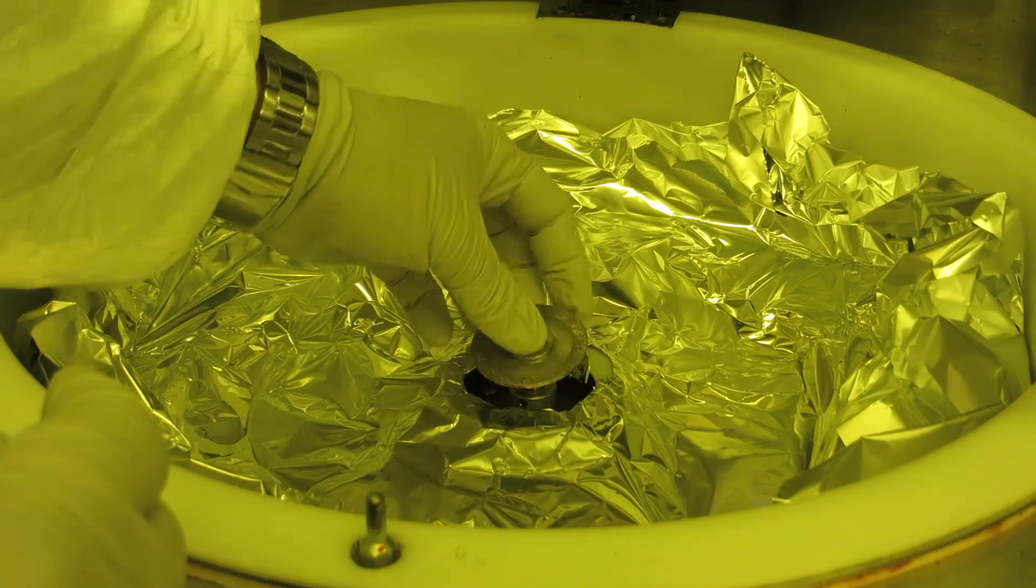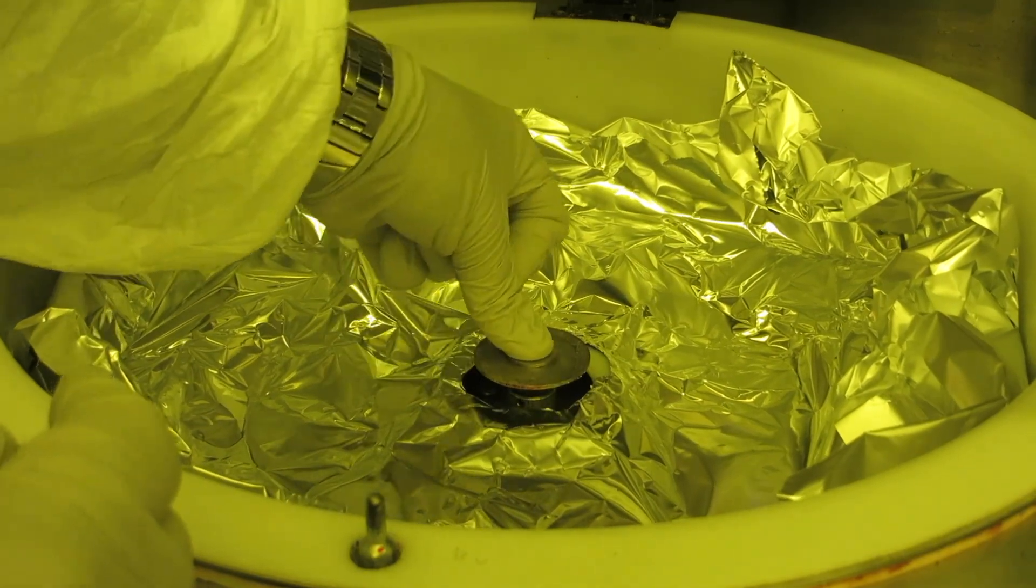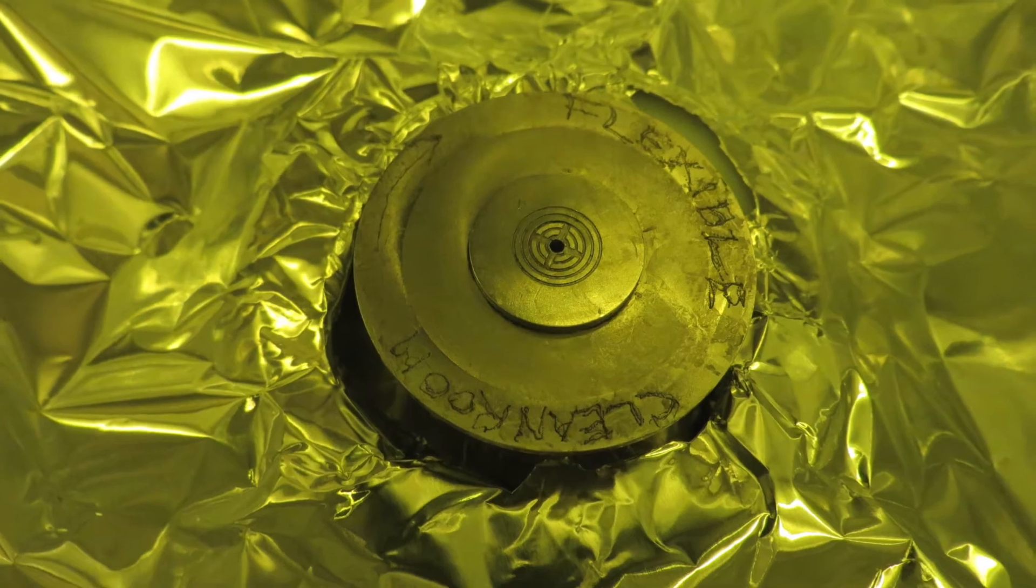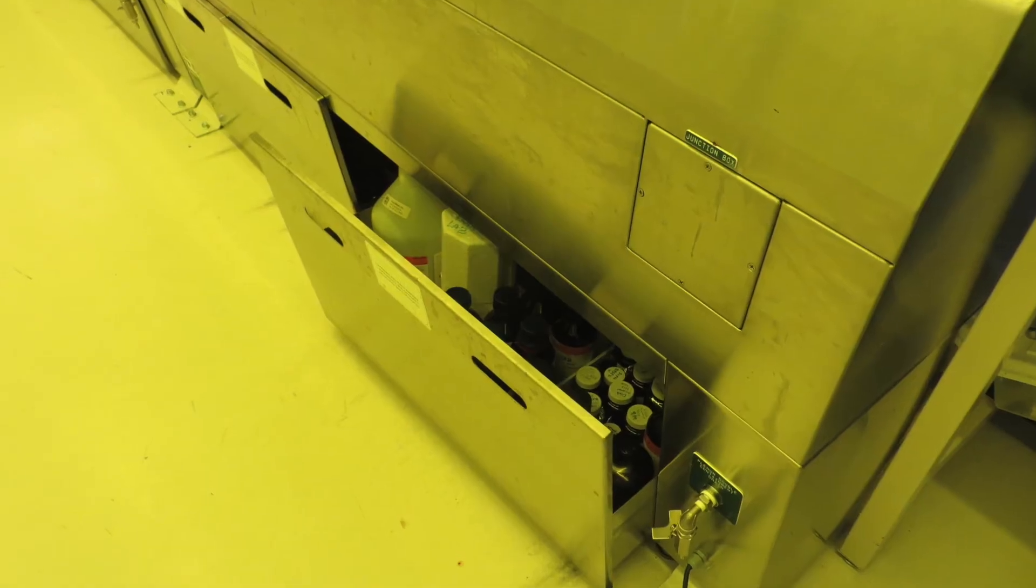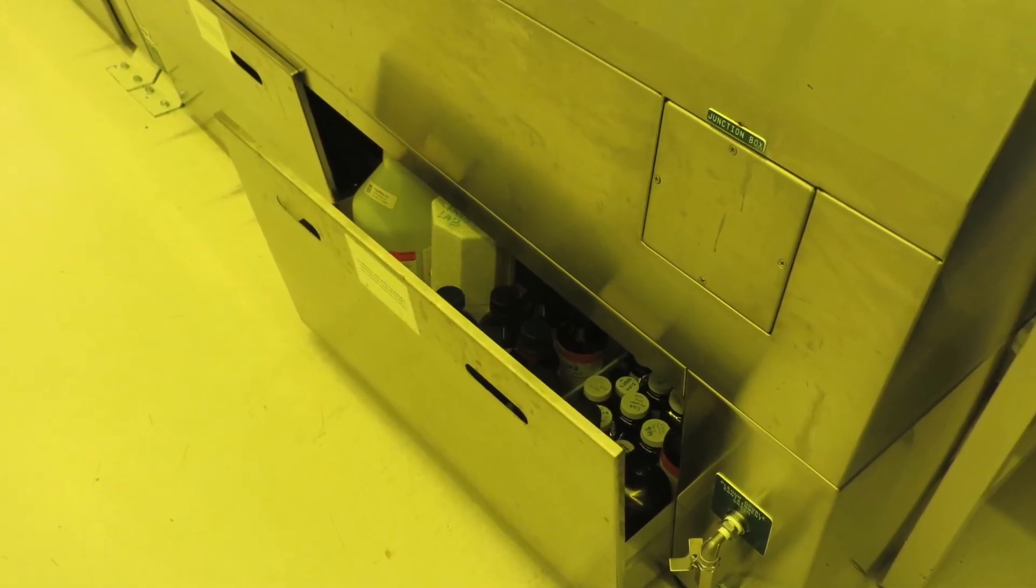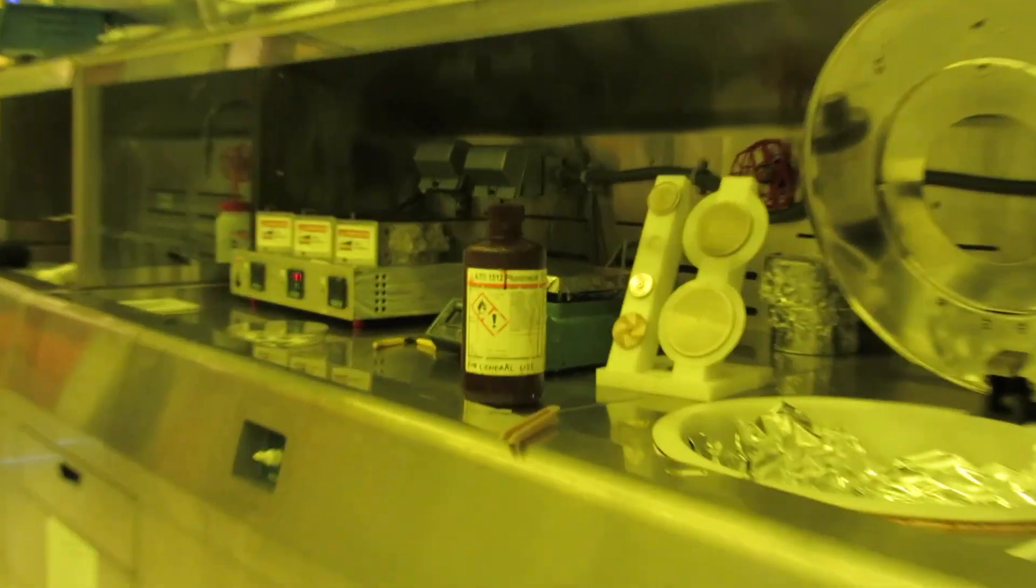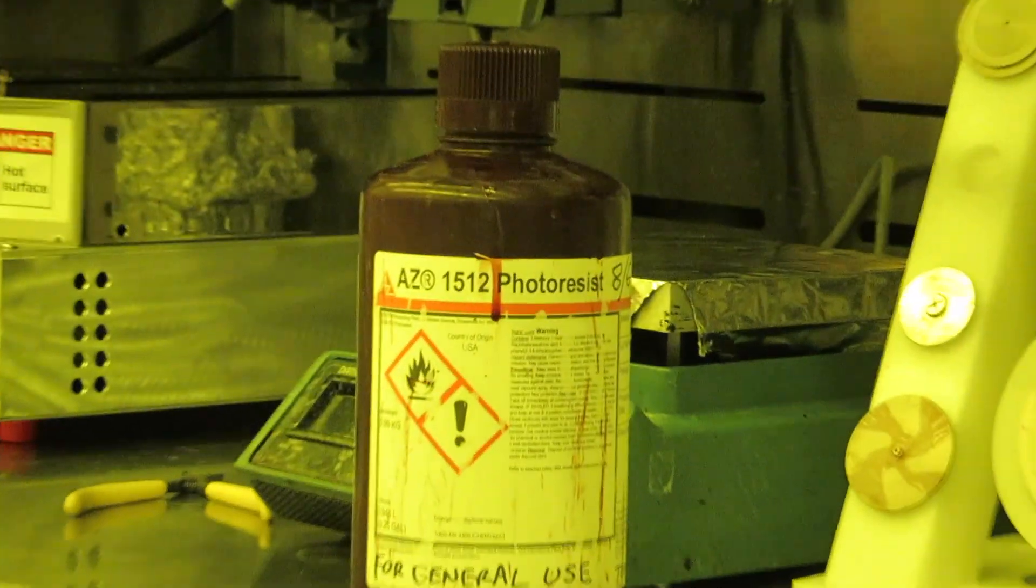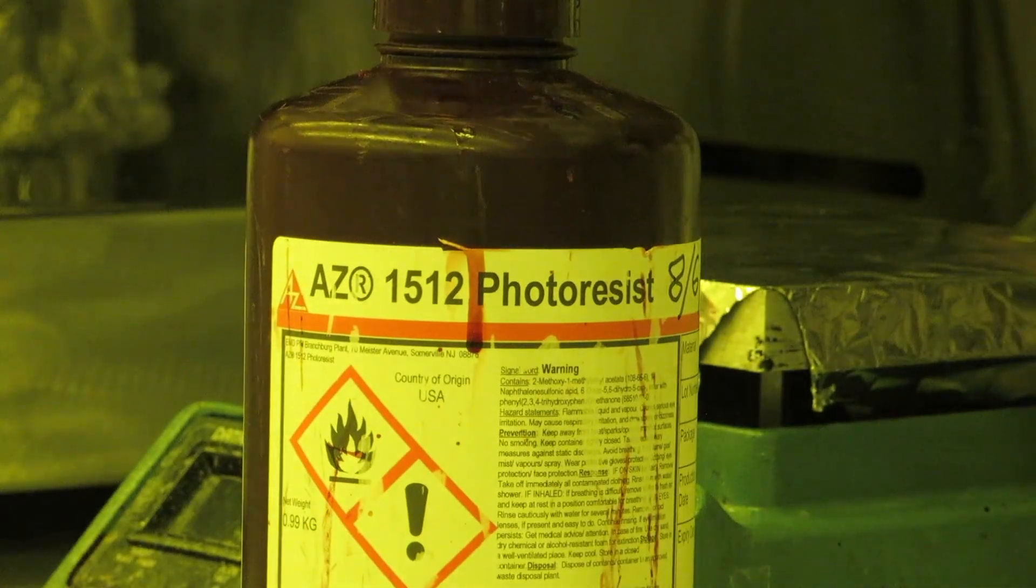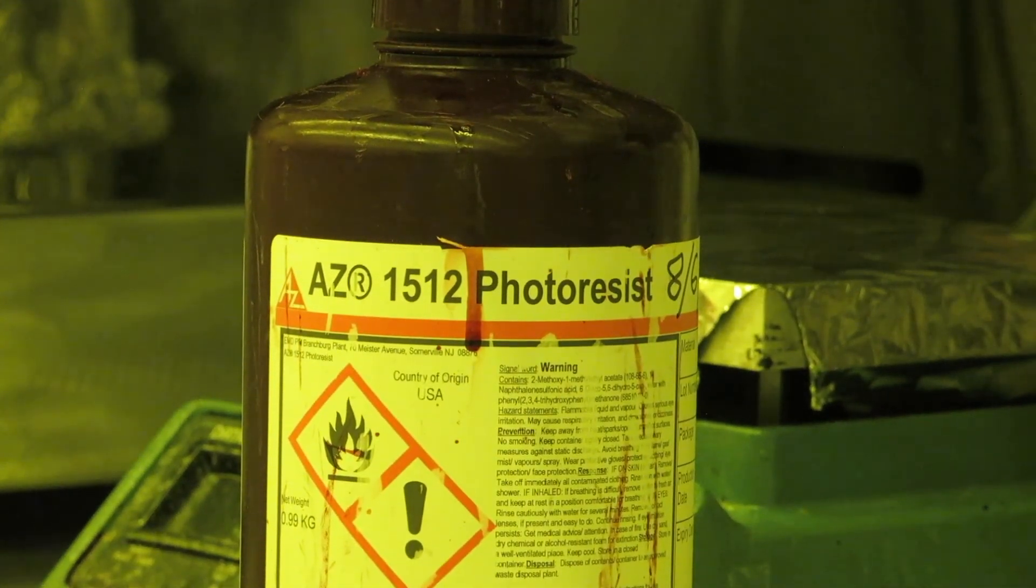The O-ring makes a seal between the chuck and the shaft. In the drawer below is where you will find most of the photoresists. We provide this AZ1512 resist, which is a good general purpose positive resist. In a positive resist, those portions which are exposed to UV light are what washes away during the subsequent development step.